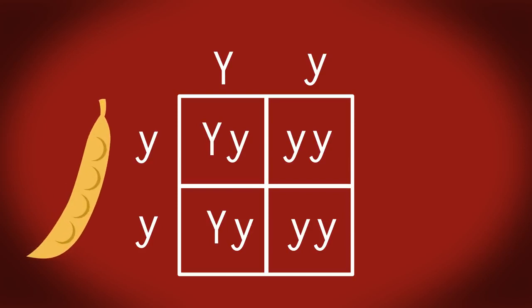So the dominant yellow pea pod is shown by capital Y and the recessive green pea pod by little y. Now let's do our Punnett squares.